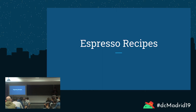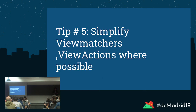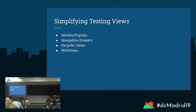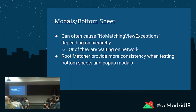Espresso recipes — these are things I came across while testing different components and views that I think might be useful. Tip number five: simplify view matchers and view actions where possible. Here are some components you'll commonly see in your application: popups, modals, navigation drawers, recycler views, and web views. If you attempt to write tests in a simple way with onView perform action, you'll likely run into errors with these specific views.